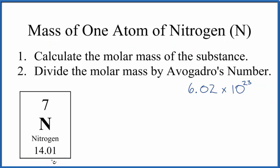Probably the best way to do it is if you think of this 14.01 having the units grams per mole. So we have 14.01 grams of nitrogen in one mole, and we can multiply this by a conversion factor because one mole of any substance is made up of Avogadro's number of particles.